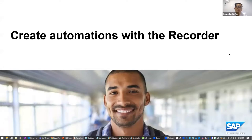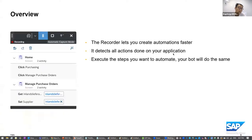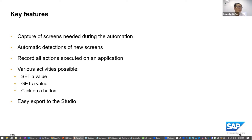Now we will see how we can create automation using the recorder. Within SAP Process Automation, we have this tool called the recorder. It lets you create your automation faster — it detects all actions that you do on your application. You just need to execute the steps you want to automate: click on this application, fill this field — all these actions are recorded, so your bot will do the same during its execution.